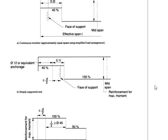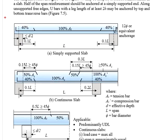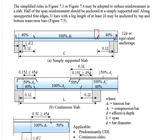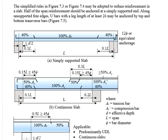If you find this difficult to understand, you may refer to this diagram. You may have 100% of the reinforcement bar. Towards the support, you can have 40% of the bar area. Curtailment is at a distance of 0.1 times the effective length, with reference to the centroid of the support, not exceeding half of the effective depth. Make sure you provide sufficient anchorage within the slab of not less than 12 times the bar diameter.